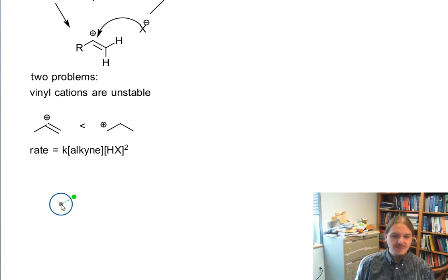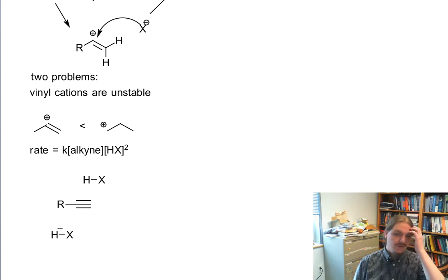And so one proposal for this mechanism then that would involve two molecules of the acid might look like this, where we have a molecule of acid on one side and a molecule of acid on another. And we get kind of this cascade process where the alkyne is reaching for a hydrogen but at the same time the halogen from another acid molecule is coming in and forming the other bond.